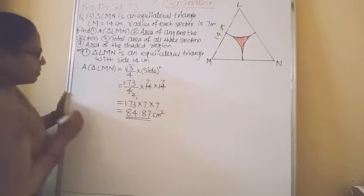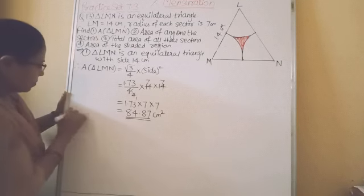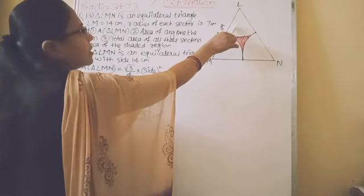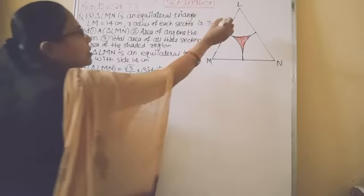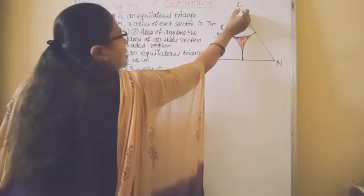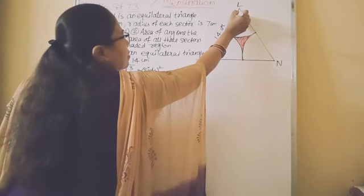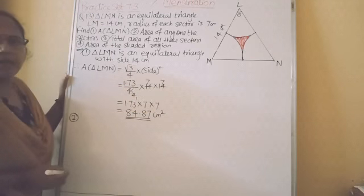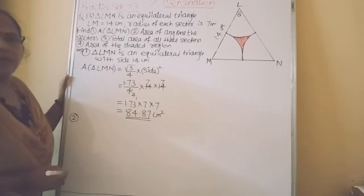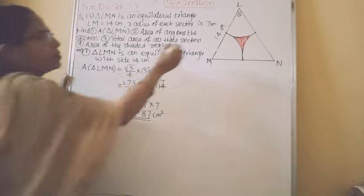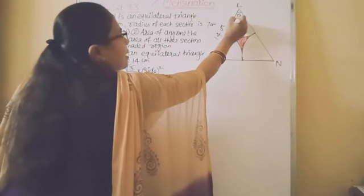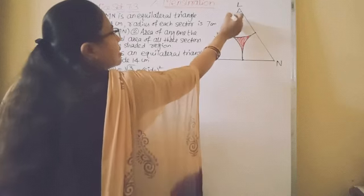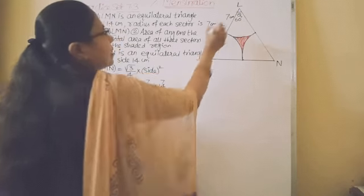Now let us find second one. Now here first we will find out area of this one sector. This sector is having central angle theta, which is the angle of an equilateral triangle and each angle of an equilateral triangle is 60 degree. So here theta we have 60 degree and the radius of each sector here is given 7 cm.